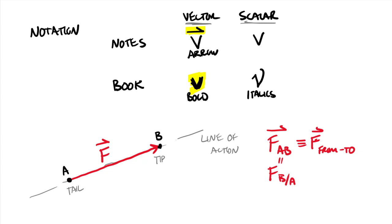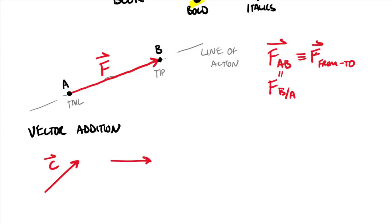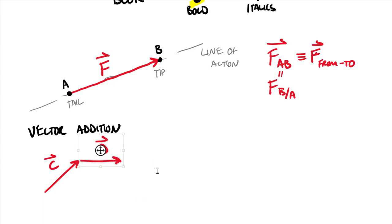When we think about vector addition, if I have two vectors — say vector C and vector D — there are two ways to add them: tip-to-tail and the parallelogram method. Using tip-to-tail, I take one vector and move it so its tail touches the tip of the other. Adding C plus D gives us a third vector called the resultant, labeled R. So C + D = R, the resultant always meaning the sum.